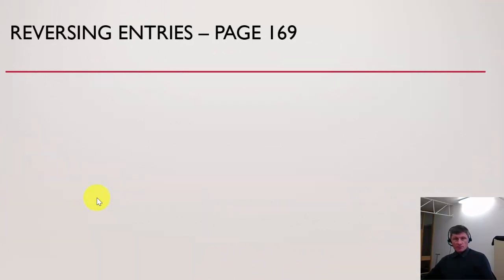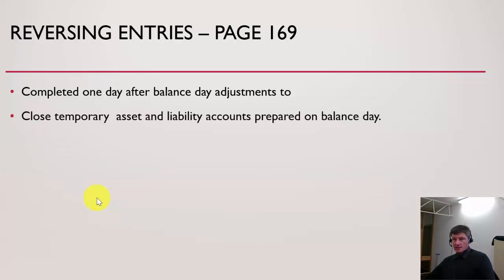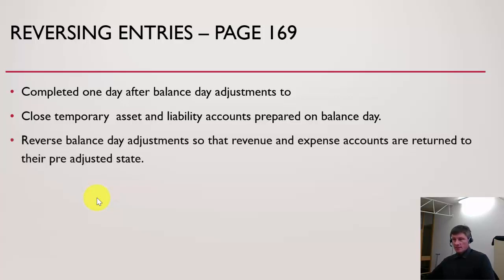Reversing entries are nothing like reversal entries. They relate to balance day adjustments and are made one day after balance day in order to close the temporary asset and liability accounts, like prepaid expense and accrued expense, that were prepared on balance day. So these accounts only appear for one day. They also reverse the revenue and expense accounts that were initially adjusted, which must be returned to their initial state before balance day — otherwise those accounts will be under- or overstated and counted twice.